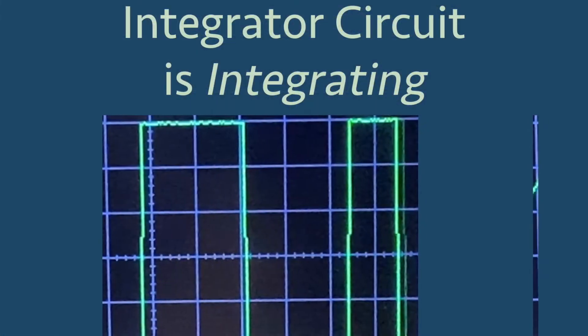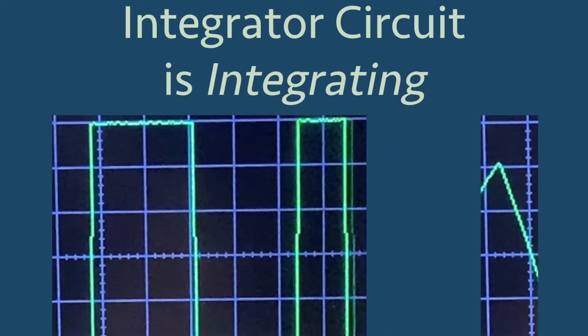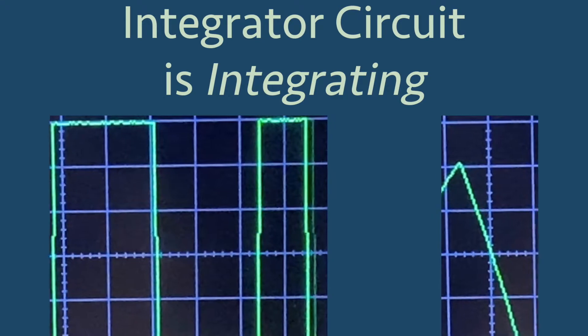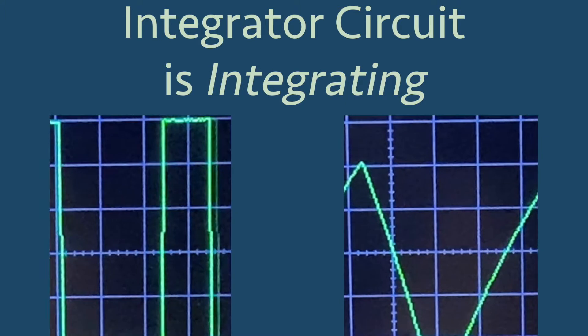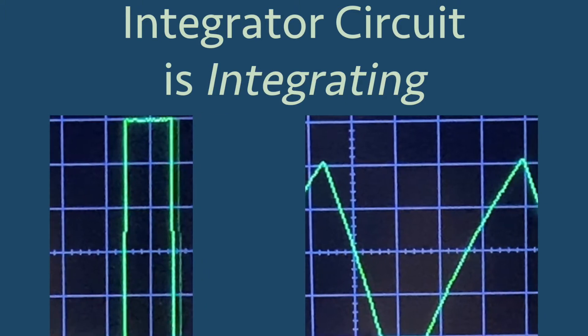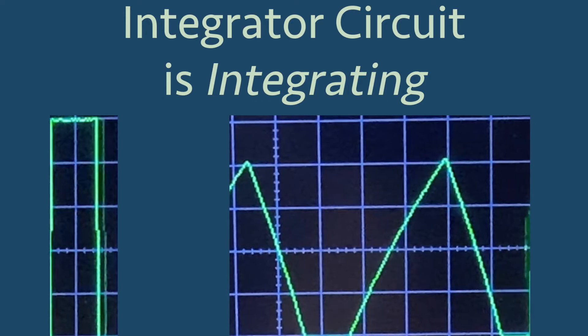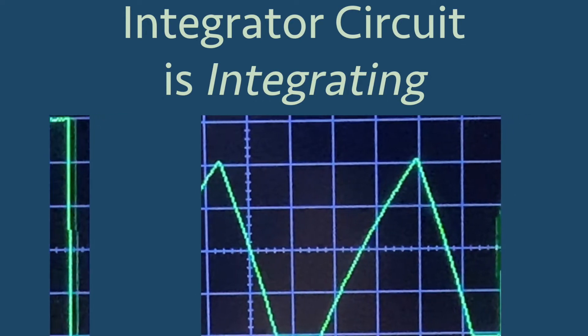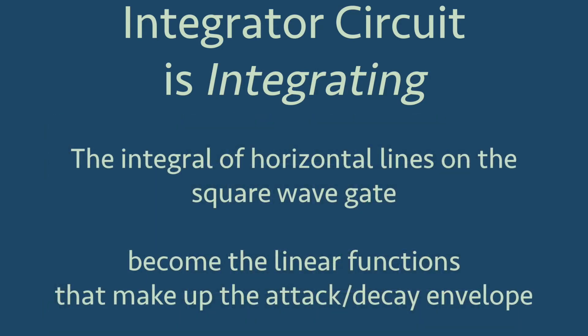So why is this called an integrator? What sort of integration is happening here? In the video demonstrating the high-pass and low-pass filters, we discovered that we could differentiate a triangle wave to create a square wave by using a high-pass filter. We could then undo this by integrating the square wave back to a triangle wave using a low-pass filter. We have now just seen a similar idea. The horizontal lines of the square wave gate signal were integrated to become the slopes of the attack and decay parts of the envelope.